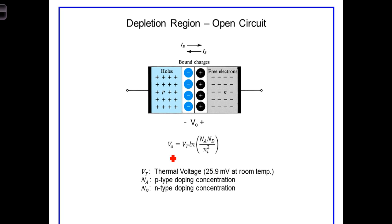This junction voltage, V-naught, can be calculated using this formula, again where V-sub-T is the thermal voltage, which is about 25.9 millivolts at room temperature. N-sub-A is the doping concentration on the P-side. N-sub-D is the doping concentration on the N-side. And N-sub-I is the intrinsic carrier concentration, either for electrons or for holes.